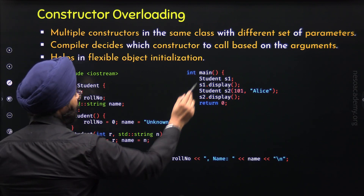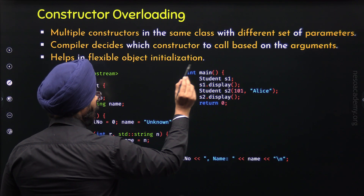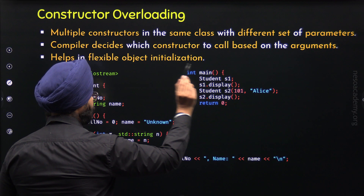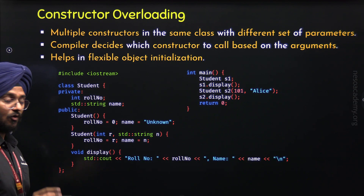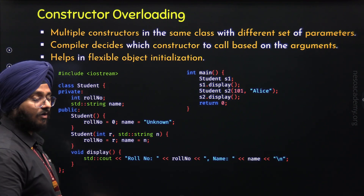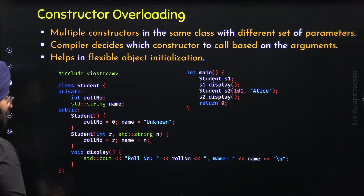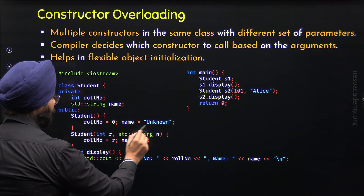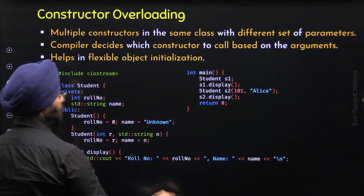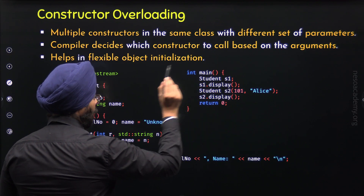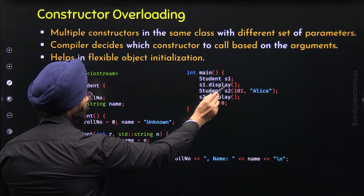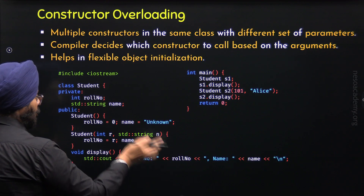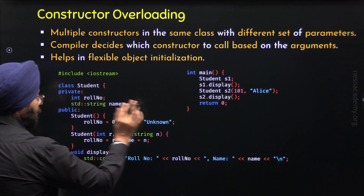Inside the main function, I have defined the object S1 of class Student. I have only defined this object — I have not initialized it. Therefore, the default constructor will be called. This makes sense, and therefore role number will receive 0 and name will receive the string "unknown". These values are associated to the S1 object, so if we call the display function through S1, we will see the output as role number 0 and name unknown.